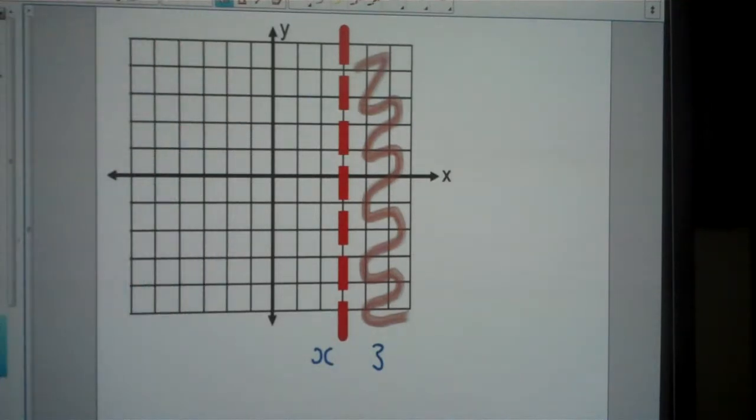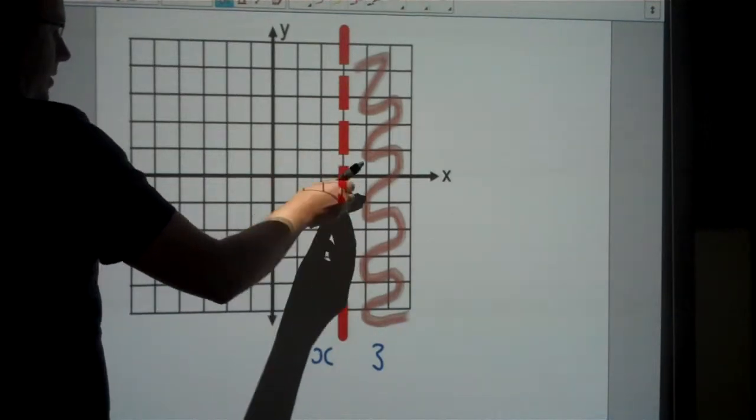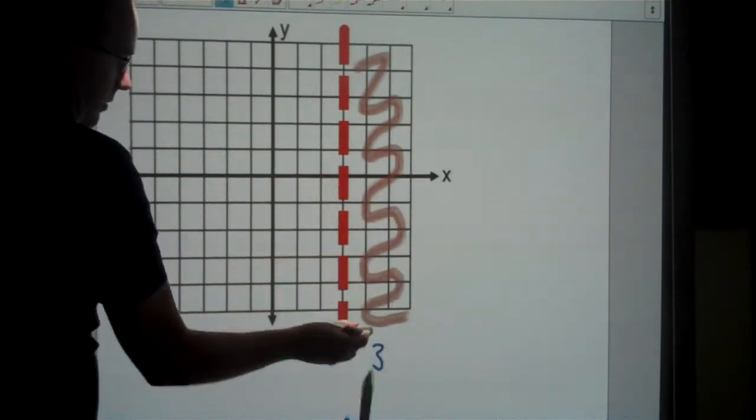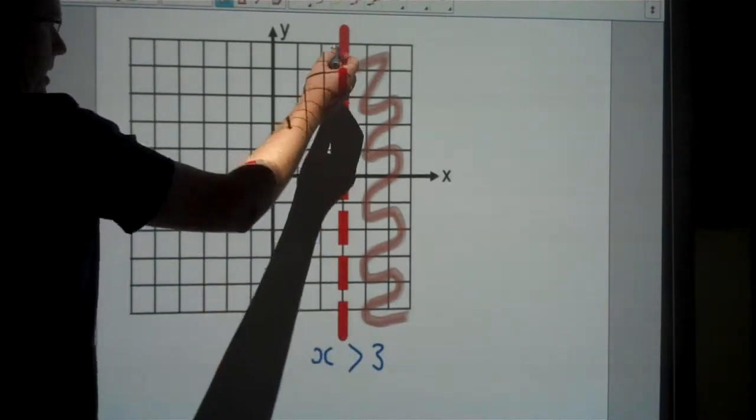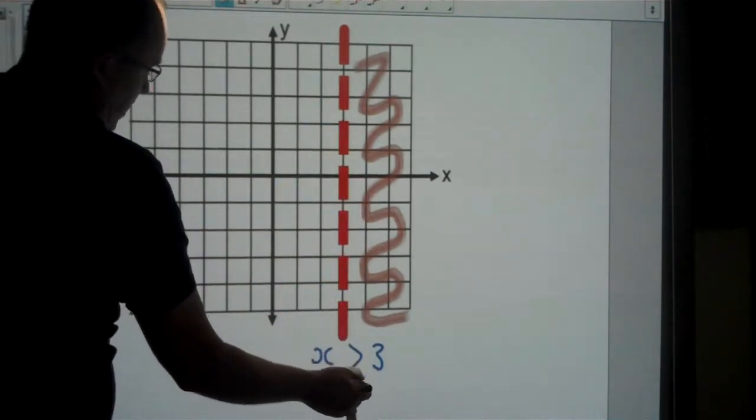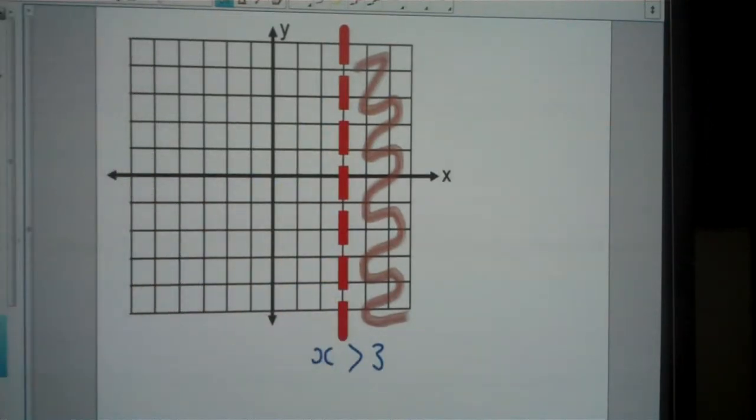We have to decide which side of the line is shaded. It's not above or below for this one, it's left or right. Since it's to the right, my inequality points to the right as well. Since this is a dotted line, I don't need an equals sign on my inequality. So the answer is x is greater than 3.